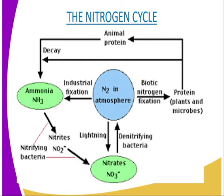Some soil microorganisms reduce nitrates to nitrites, ammonia, and even nitrogen gas, which are not useful to plants. The process is called denitrification. Examples of bacteria involved in the process of denitrification include Pseudomonas denitrificans and Bacillus denitrificans. They utilize the oxygen released in the process for their respiration. The process of denitrification deprives the soil of fixed nitrogen, but it is important in releasing free nitrogen into the air, hence the nitrogen is again available for cycling.